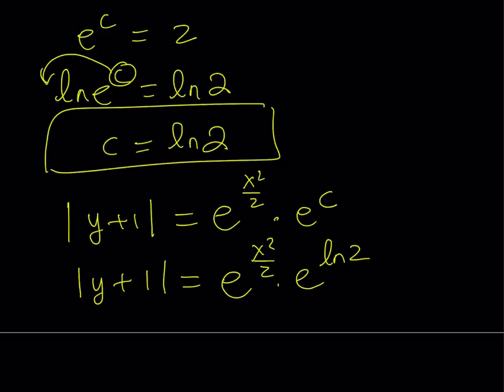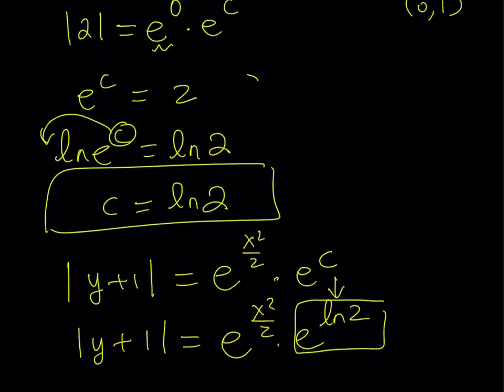But we didn't need to do any of this. This is equal to 2 because we already knew that e to the power c is equal to 2 from here. So actually, in this case, you don't really have to solve for c. You can just keep this as is.